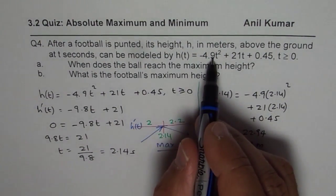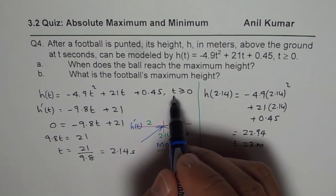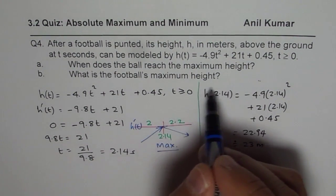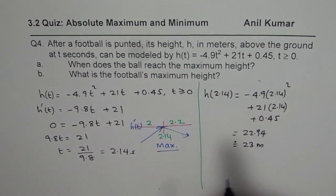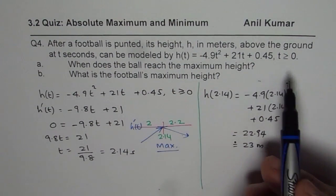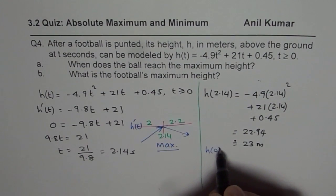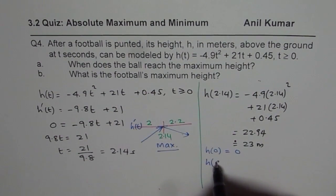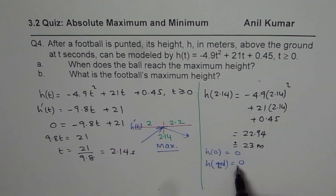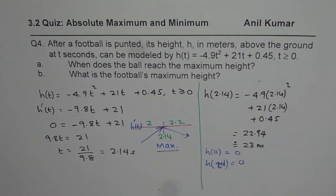Another way is to find the zeros of h(t) to know the full domain. We know t ≥ 0, but we should also find when the ball strikes the ground. Then you compare the height at all those boundary points — h(0) will be 0.45, and when the ball strikes the ground h will be 0 again. Within that interval, we find that h(2.14) is indeed the highest value.